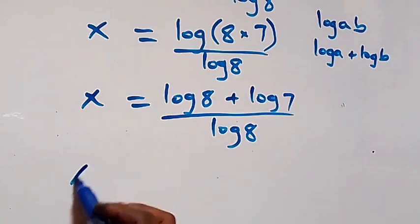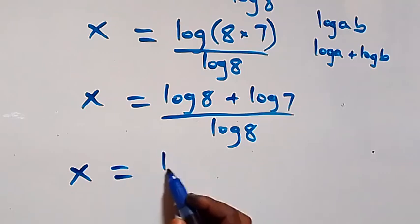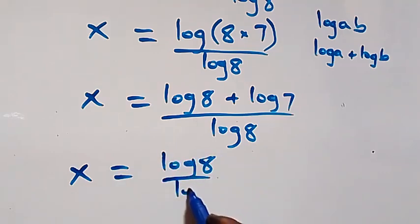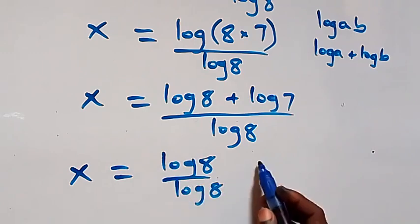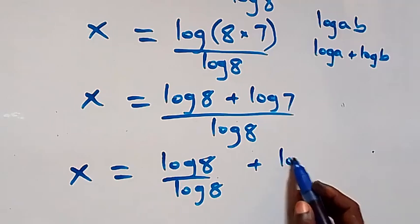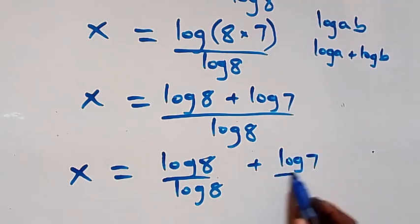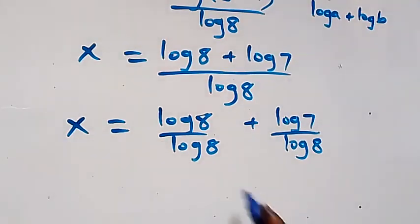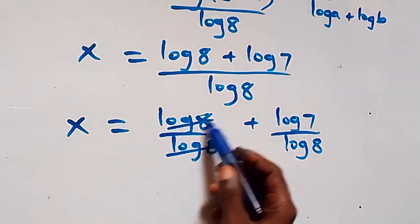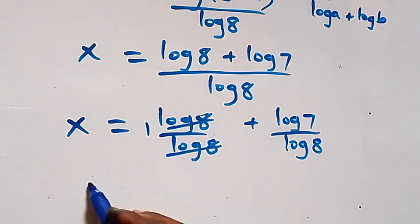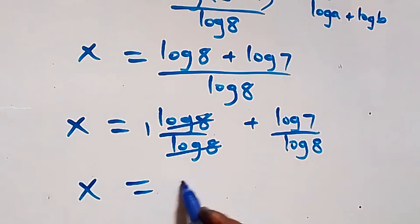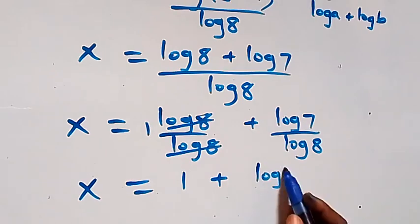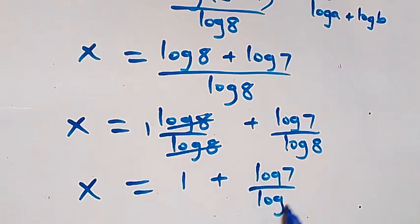Here log 8 over log 8 cancels, giving us 1. So we have x equals 1 plus log 7 over log 8.